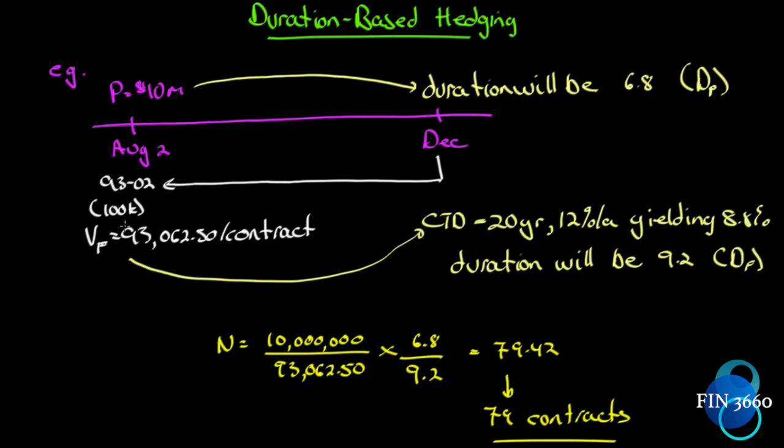Since we've chosen this as the contract we're going to use, we've got the value of the contract. We first have to identify the cheapest to deliver bond before we can come up with a duration measure for it. So we look at what's available for that period of time, and we can identify a 20-year government 12% annual bond yielding 8.8% is the cheapest to deliver at this point in time. So we will use that, calculate the duration, what the duration will be at this point in time, and we get 9.2. So there's the duration on the asset underlying the futures contract. We have the duration of our portfolio at this particular time. We have the current value of our portfolio and we have the current value of a futures contract.